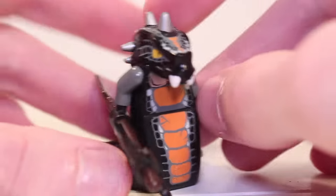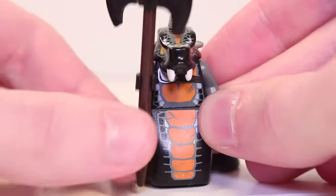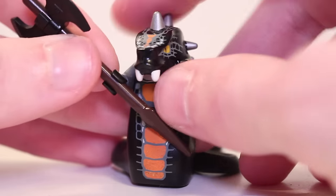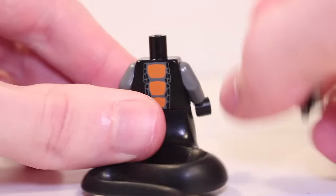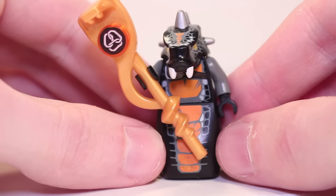And finally for the Constrictai it's General Skalidor, also exclusive to the epic dragon battle where he wields this giant axe. He shares Bytar's head now with silver spikes, with an orange stripe running down his torso. Pairing him with his tribe staff looks good too. For the Constrictai we've got a trans orange viper and a golden one.